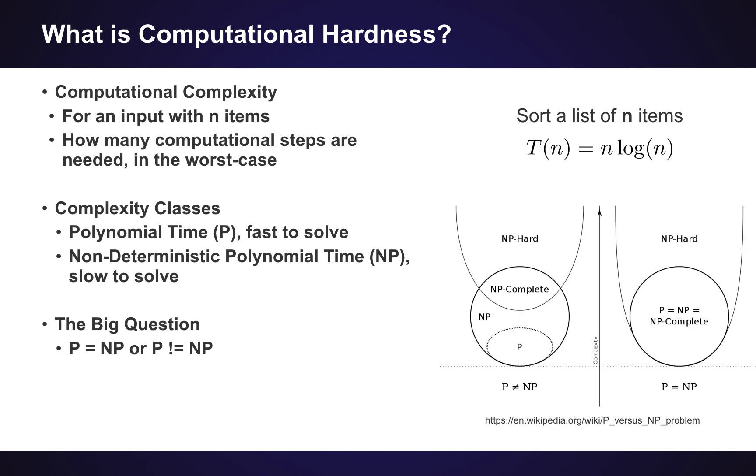So one of the biggest questions in computer science is whether this class of polynomial time problems is the same in kind of worst case complexity as the non-deterministic polynomial time class, or if they're different. You can see these two Venn diagrams for where different problems might lie, and there's this big question: is the set of NP complete problems equal to the set of P problems in terms of this computational complexity, or are they fundamentally different? It's kind of shocking that computer science hasn't been able to answer this question yet.